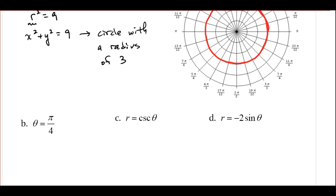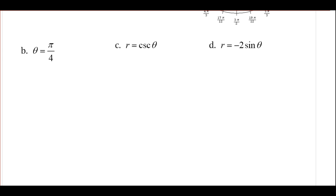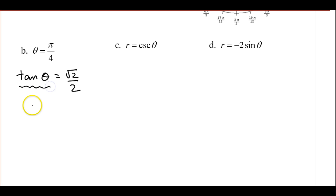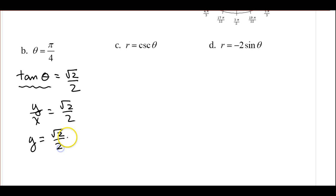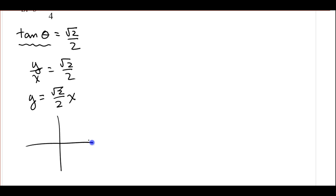Moving on to the next part: θ = π/4. The tangent of π/4 is √2/2. I also know that tan(θ) = y/x, so y/x = √2/2. Cross-multiplying and solving for y gives y = (√2/2)x. So we've got a line with slope √2/2.